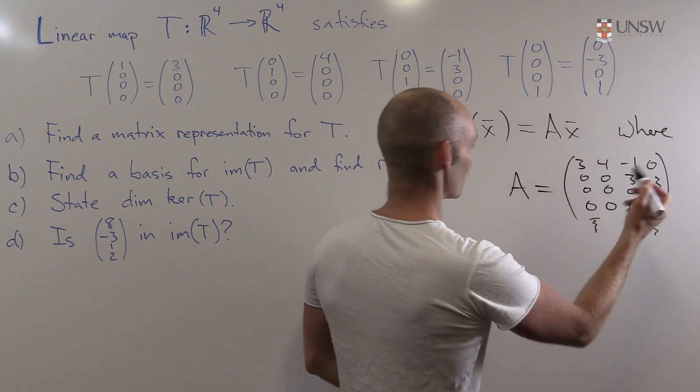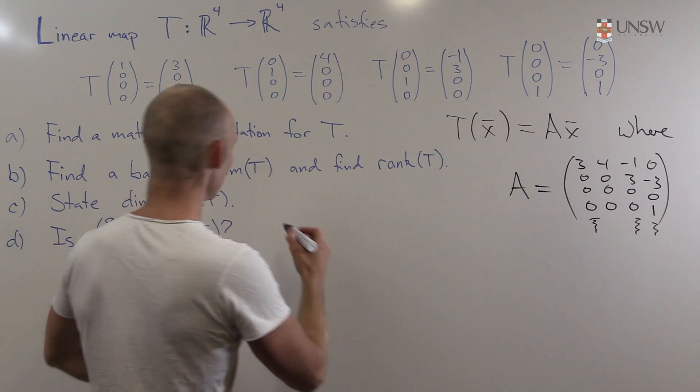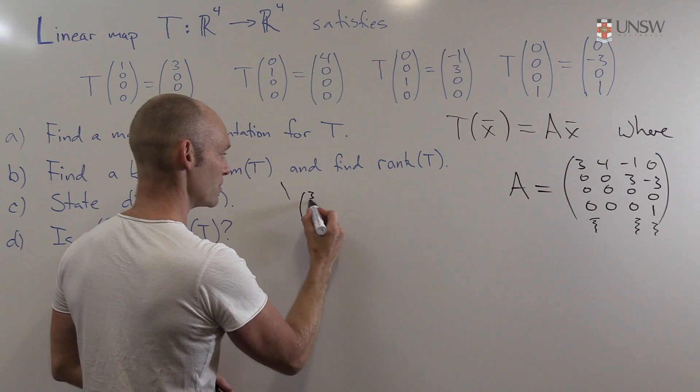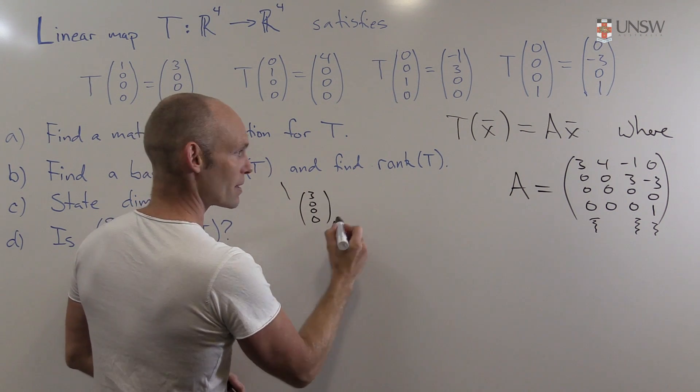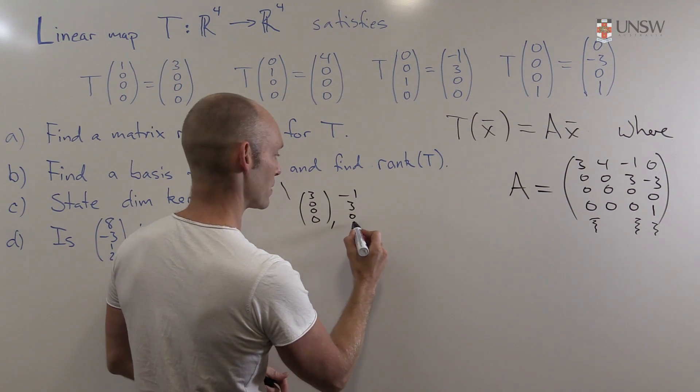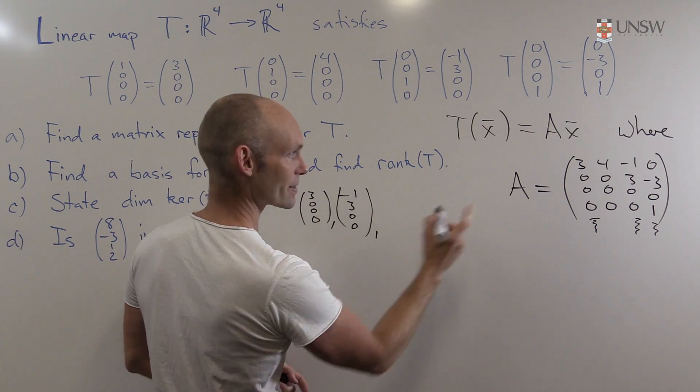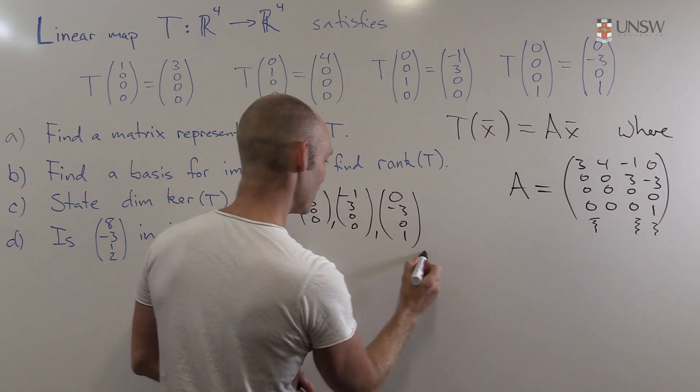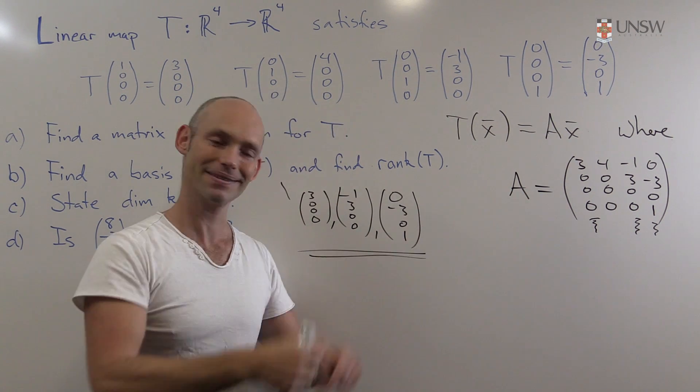So we can write up, find a basis for the image here. Well, these three columns here: (3,0,0,0) and (minus 1, 3, 0, 0) and (0, minus 3, 0, 1). And that's a perfectly good answer. There we go.